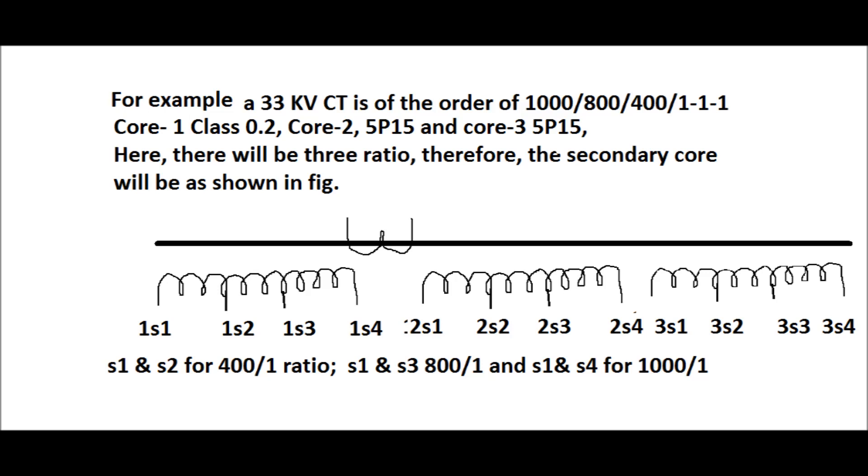Core 2 and 3 are used for protection purpose. Here there will be 3 ratios. Therefore, the secondary core will be shown in this figure. There will be 4 terminals in the secondary core. S1 and S2 will be taken for 400 by 1 ratio as the number of turns in the secondary is lower. And S1 and S3 are for 800 by 1 ratio. And S1 and S4 is used for highest ratio 1000 by 1 ampere.